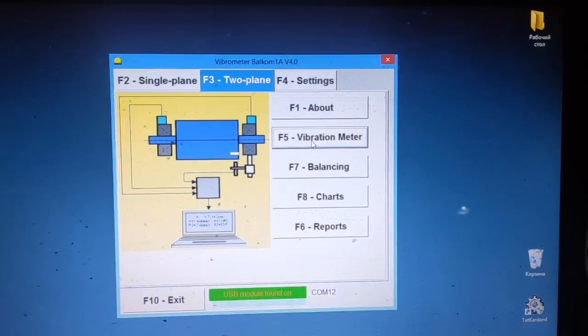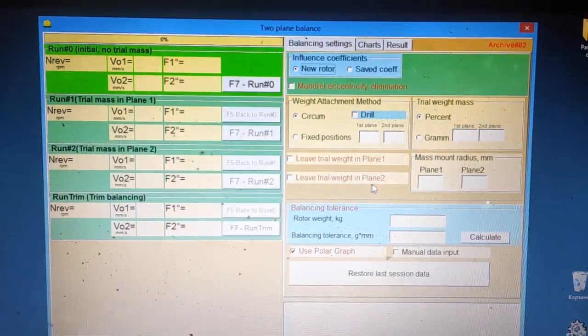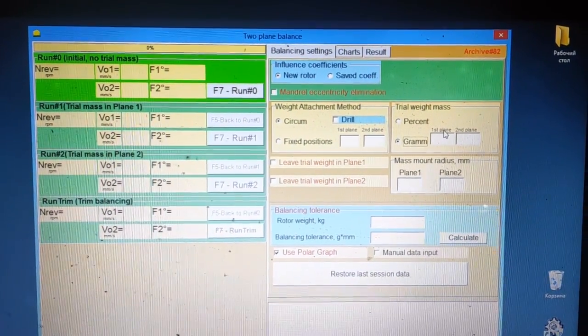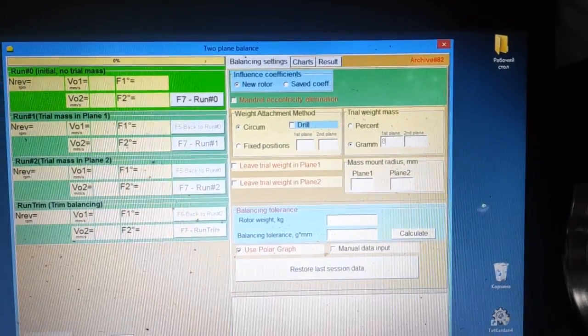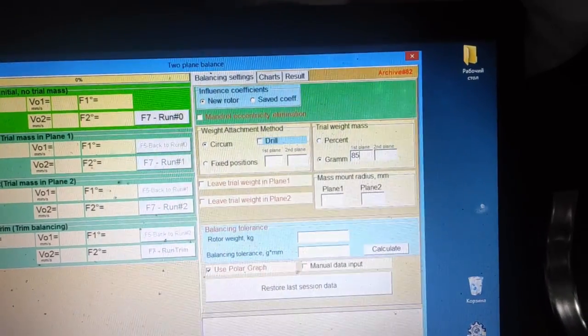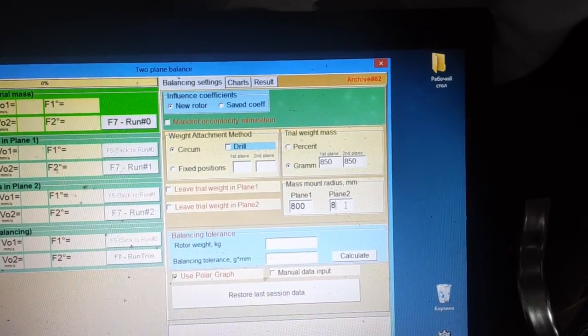Exit the vibrometer and go to the balance tab. If needed, enter the rotor name and location for the report. Enter the mass of test weights and the radius of mounting. The mounting radius must be entered to calculate the imbalance in grams per millimeter. If you do not need these values, you can either not enter the radius or enter approximate values.